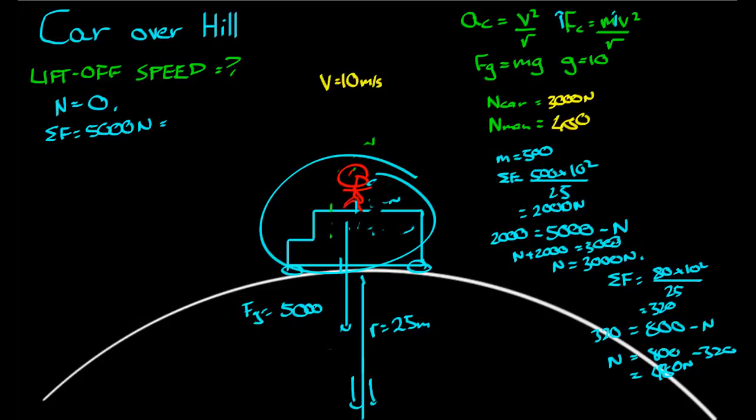At the lift off speed, even though we said if we make it go really fast it will fly off, the car will continue moving in a circle. It just won't feel any force between the tyres. So the object at the lift off speed is still moving in a circle. If it's moving in a circle, net force is equal to MV squared on R. So 5000 equals 500 times V squared on 25.